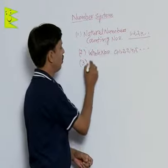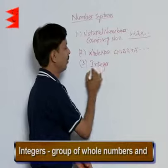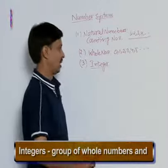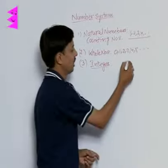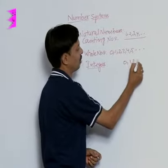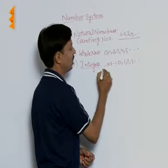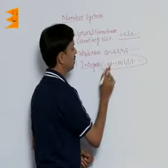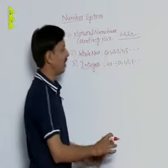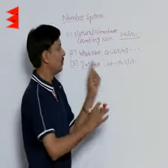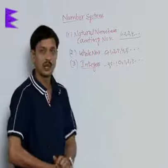After whole numbers, I would like to tell you what are integers. It is a brief revision of what you actually know in class 6th, 7th, and 8th. What are integers? Numbers 0, 1, 2, 3, minus 1, minus 2, minus 3 — these are the numbers which are complete, that is whole numbers may be positive or may be negative. These numbers are said to be integers.